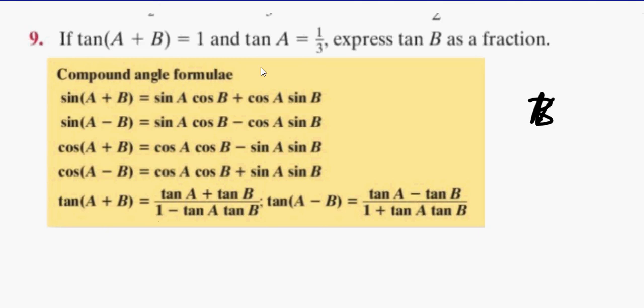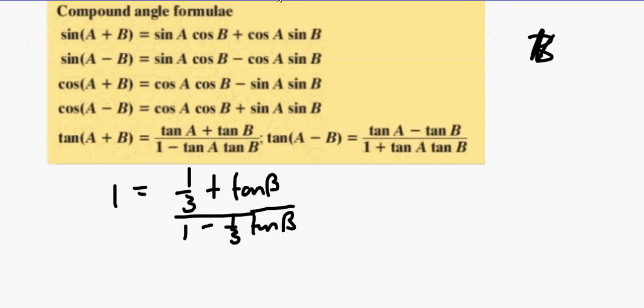We're going to replace tan A plus B with 1. Tan A is replaced with a third, and tan B we don't know. Then we get 1 minus a third tan B. We all cool with that? What's a third tan B the same as? Tan B over 3.